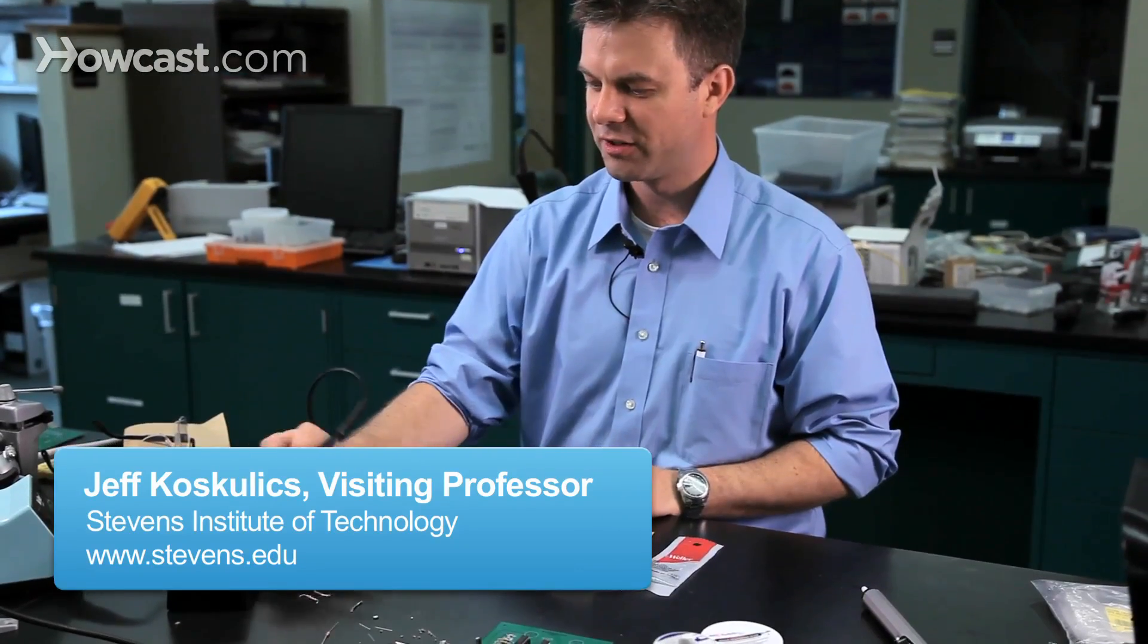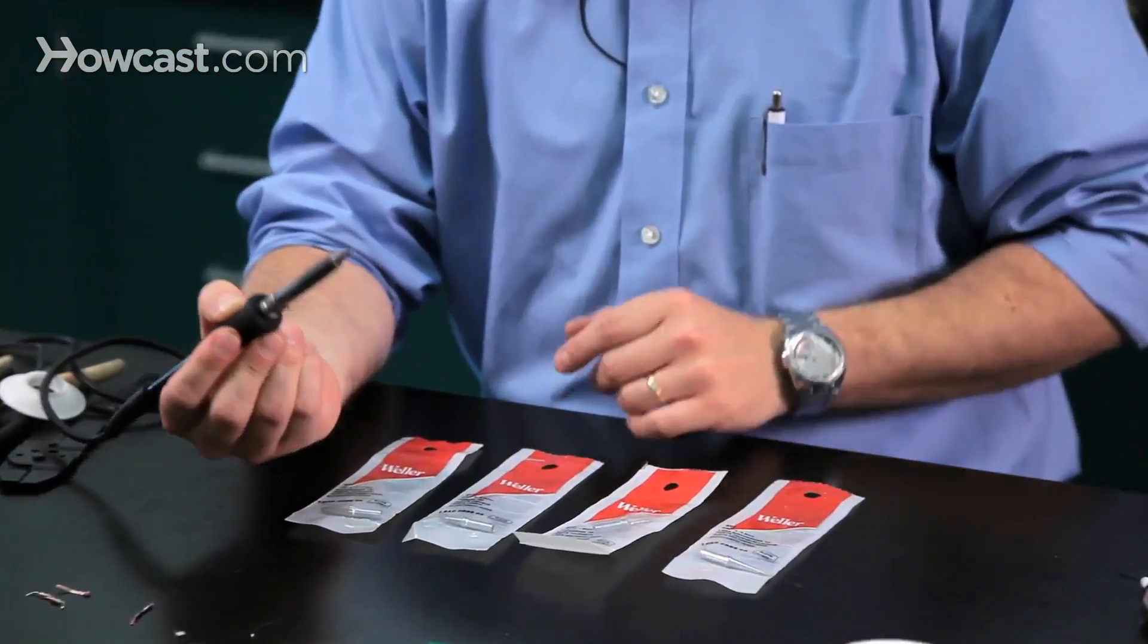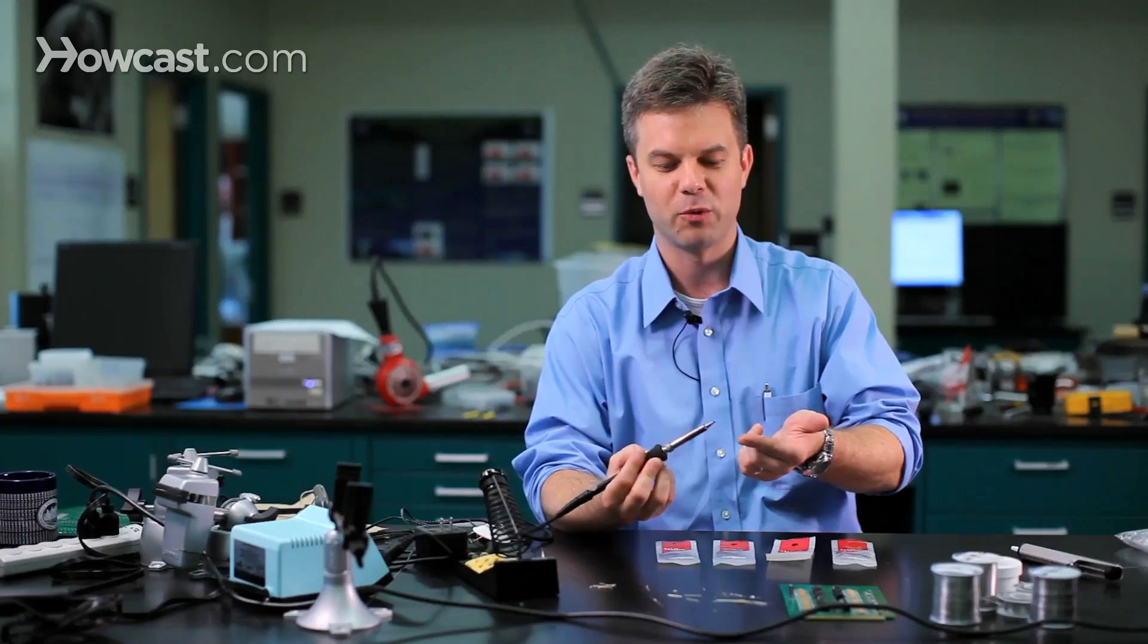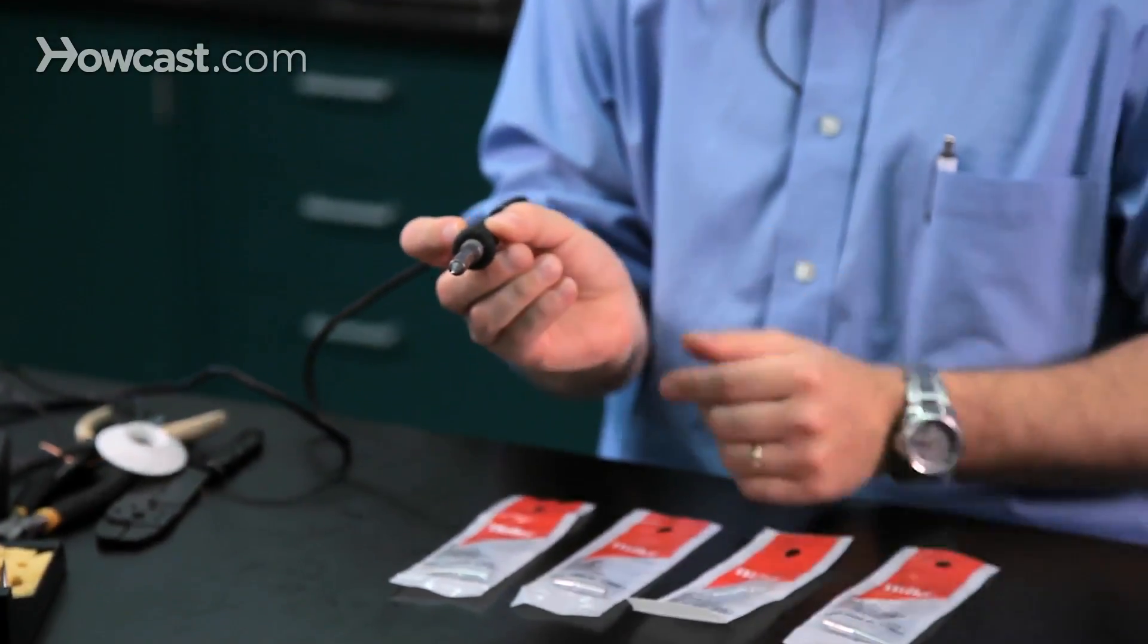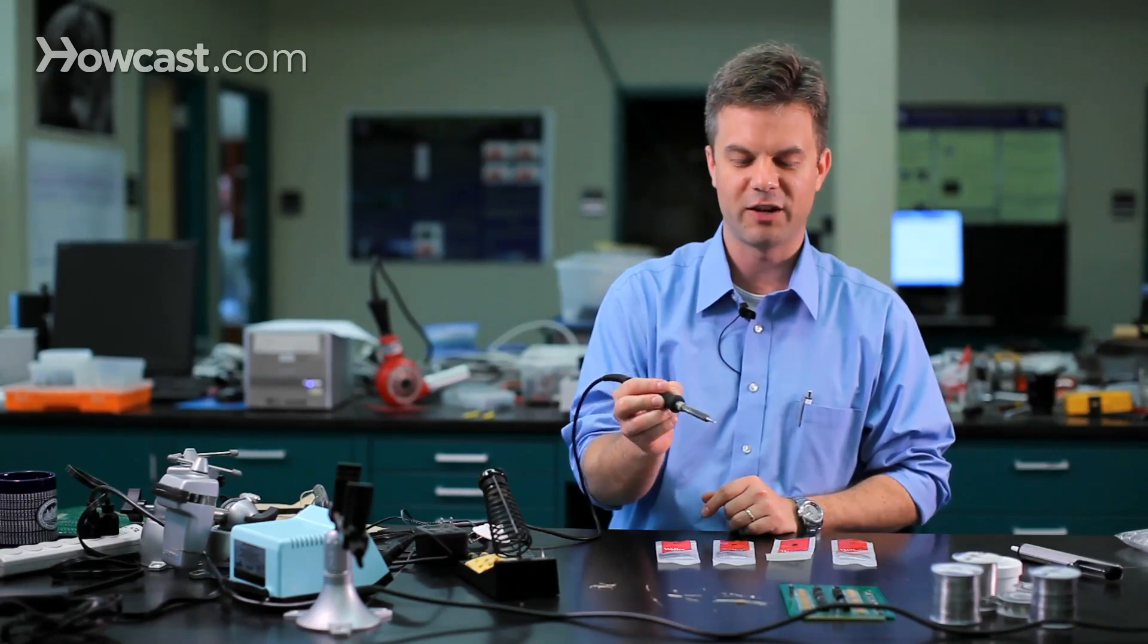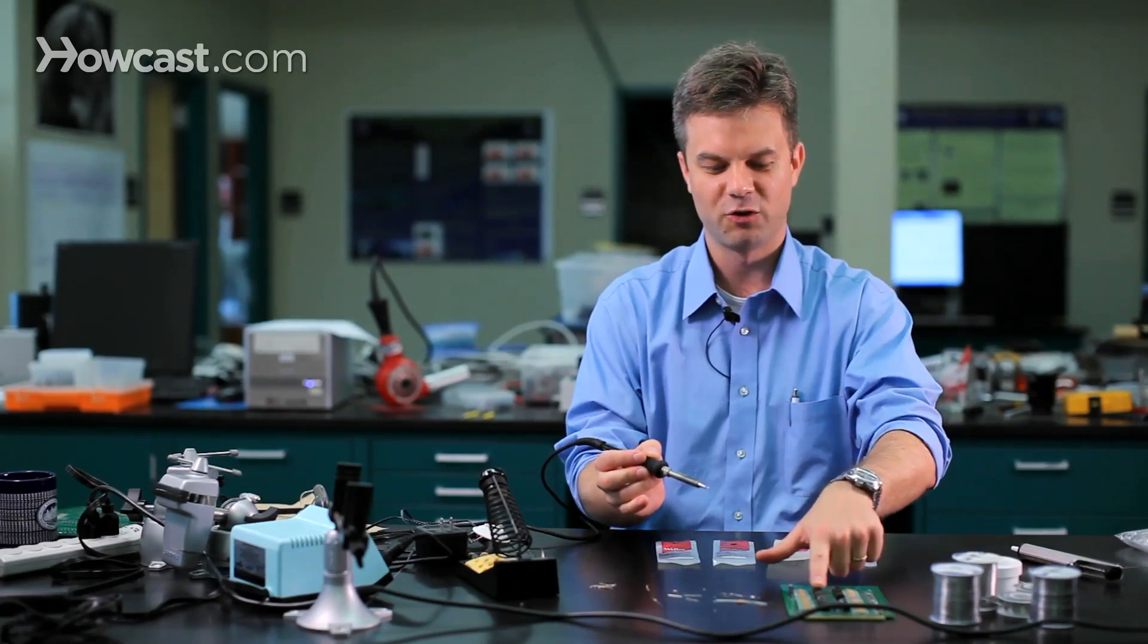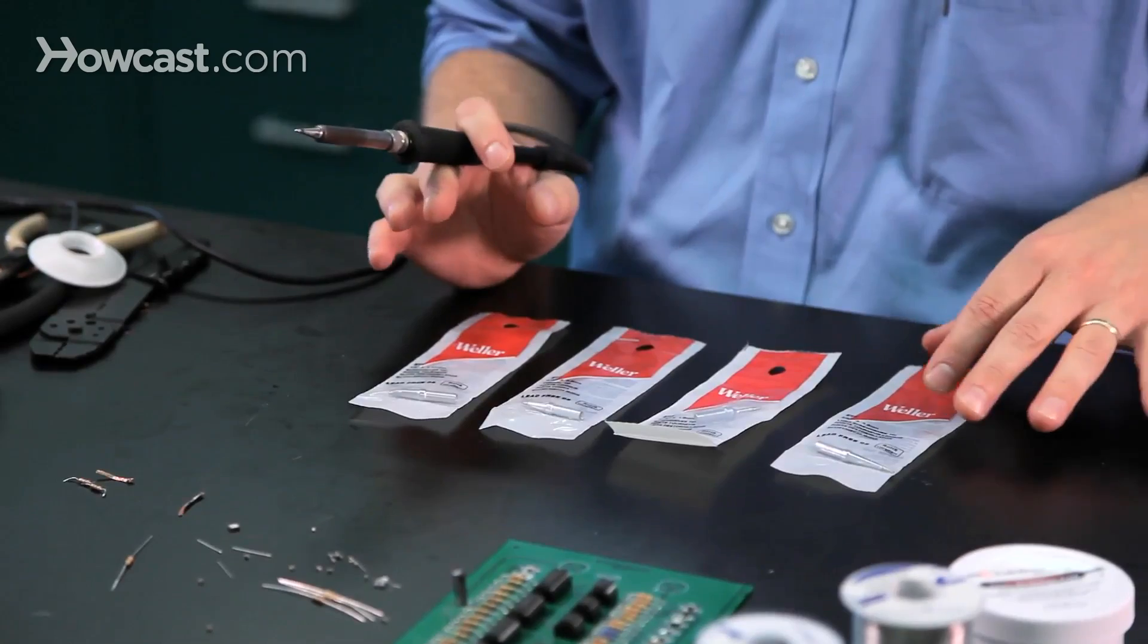There's a wide variety of tips that you can choose from in your soldering project. A typical tip that might be useful for general purpose use would be a screwdriver tip. This has two flat sides that come to a chisel type point, and that flat side can be useful for resting up against the flat side of a large component, such as an integrated circuit or a resistor leg.